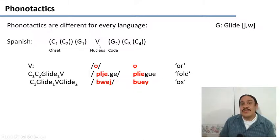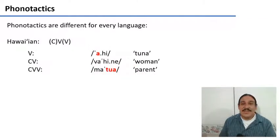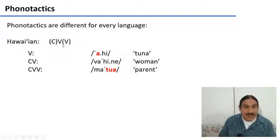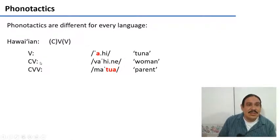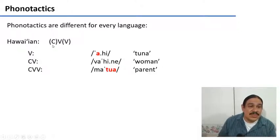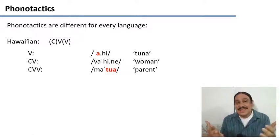Every language has different phonotactics — English permits some syllables, Spanish permits others. Hawaiian, for example, has very restricted phonotactics. It only allows one optional consonant, one vowel, and an optional second vowel, which could be a lengthening of the first vowel or a different one. The minimum syllable in Hawaiian is just a vowel, as in 'ahi,' meaning tuna. You can have CV syllables such as 'vahine,' meaning woman. And you can have CVV syllables, like the 'tua' in 'matua,' meaning parent. Hawaiian will not let you build any other kind of syllable.